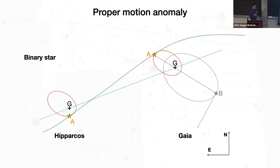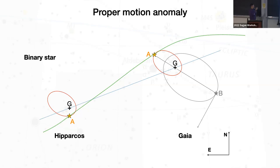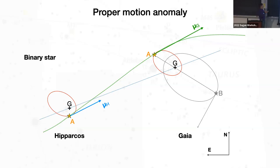If you have a companion — a planet, for instance — orbiting a star, then the star and the planet orbit their common center of mass. There will be an orbit of the star around the center of mass — basically of the photo center of the system around this center of mass — and this is what will be measured by Hipparcos and by Gaia. In this case, the proper motions measured at the Gaia epochs will be slightly different because of the motion of the photo center around the center of mass.